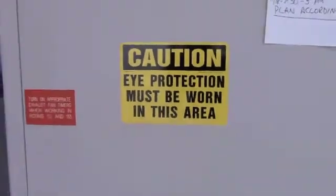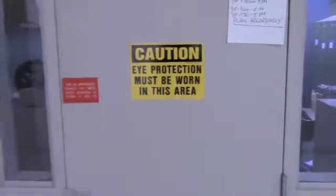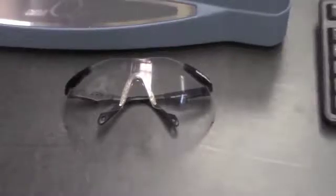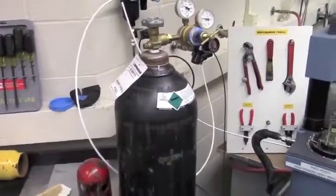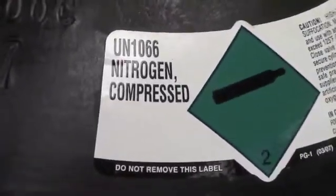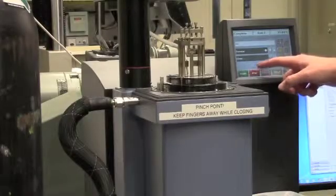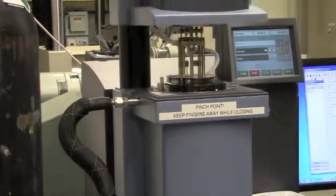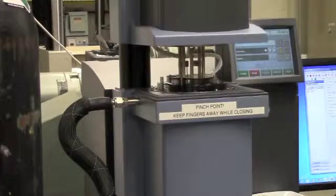There are several safety concerns to consider when using the DMA. Like all labs inside the ETEC building, safety glasses and closed-toed shoes must be worn at all times. In addition, the machine utilizes compressed nitrogen, so care should be taken not to bump the tank or damage it in any way that could cause a leak. Finally, when closing the furnace of the DMA, there is a pinch point that should be avoided.